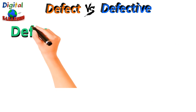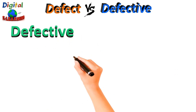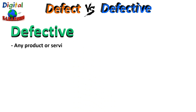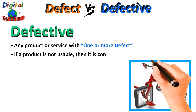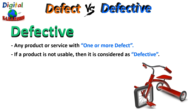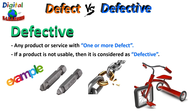Now let us look at what is defective. Defective is any product or service with one or more defects. If a product is not usable, it is considered a defective product. In short, the term defective refers to a product or component, whereas the term defect refers to a quality characteristic of a product.